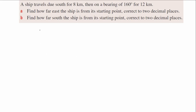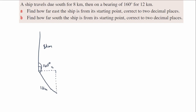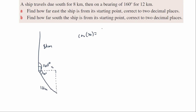For the practice problem: a ship travels south for 8 kilometers, then on a bearing of 160 degrees for 12 kilometers — very similar to what we just did. To find how far east: since east is 90 degrees, the angle in the triangle is 160 minus 90 = 70 degrees. Using cos: cos 70 equals adjacent x over hypotenuse 12, so x equals cos 70 times 12, giving 4.10 kilometers. The ship is 4.1 kilometers east of its initial position.